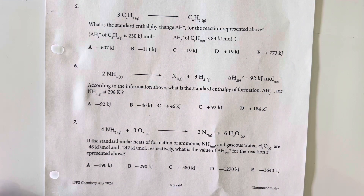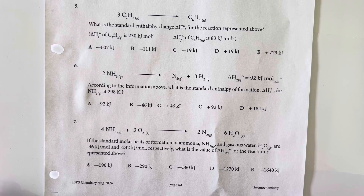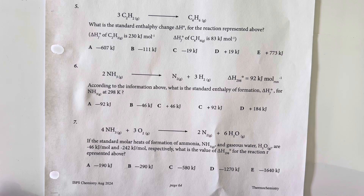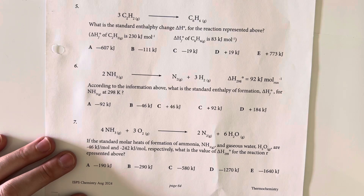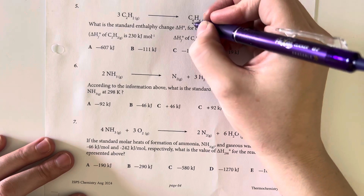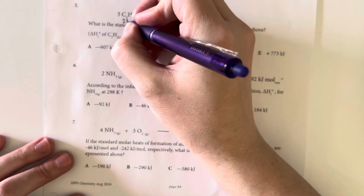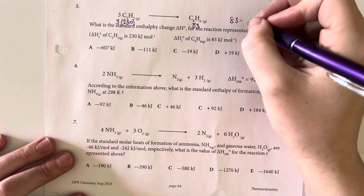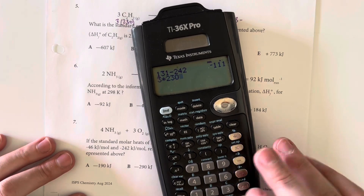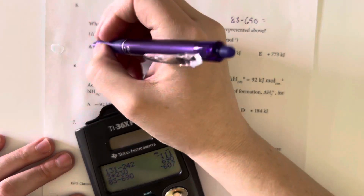What is the standard enthalpy change, delta H not, for the reaction represented above? Delta H of formation for C2H2 is 230 kilojoules per mole and delta H of formation for cyclohexane is 83 kilojoules per mole. This is products minus reactants. We have delta H of formation of 83, and then 230 for C2H2 — we do have three of them. So that is 83 minus three times 230, which gives me negative 607 kilojoules.